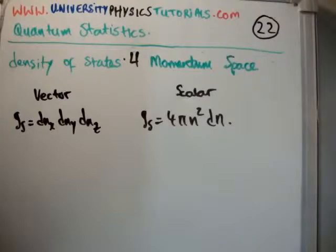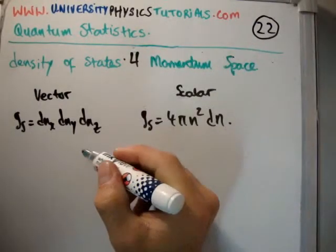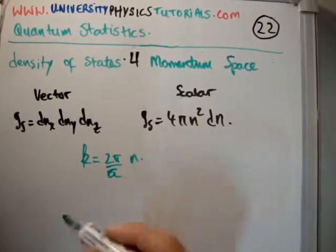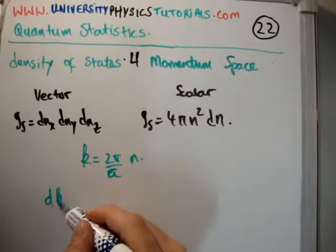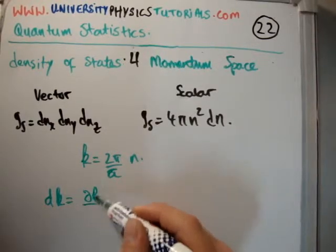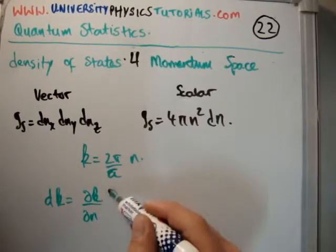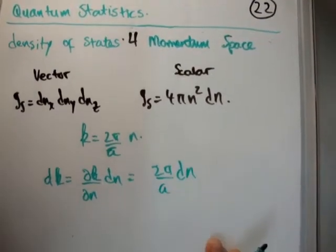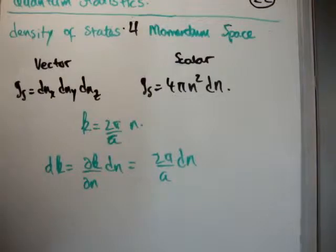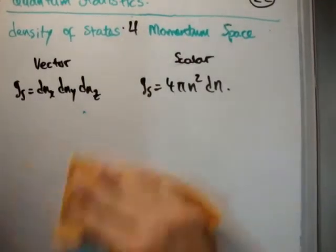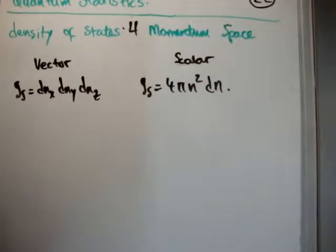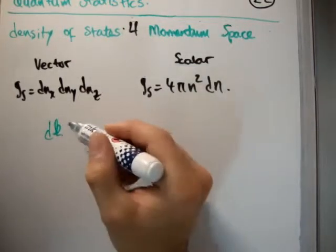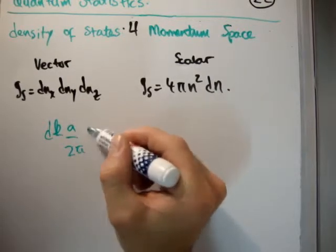Okay, so we know of course that k is equal to 2π over a times n. That means dk is equal to del k del n dn which is equal to 2π over a dn. A trivial calculation but I'm going to keep doing it so that you can understand it for more complicated expressions. So that means that dk times a over 2π is equal to dn.